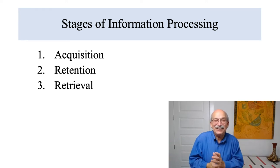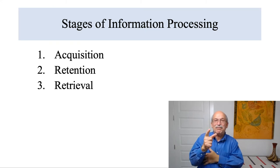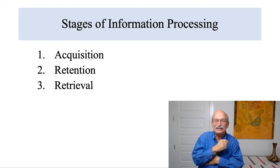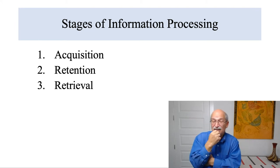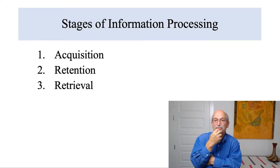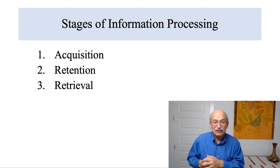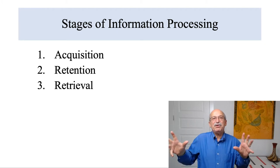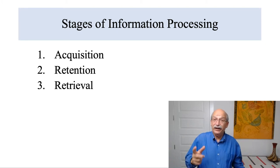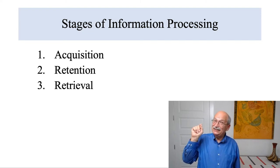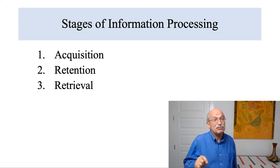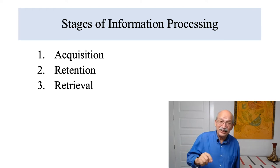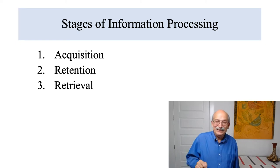So one way you can have memory failure is to have a problem in the acquisition phase — you don't learn it in the first place. You can also have problems in the retention phase; if you have a brain disease, a concussion, or brain injury, you may have memory loss. And probably 99% of cases of memory failure are problems with retrieval. The information is in your head somewhere — you just can't retrieve it, usually due to lack of proper retrieval cues.